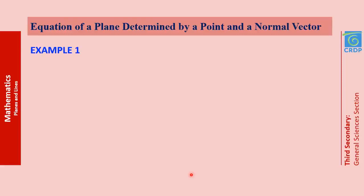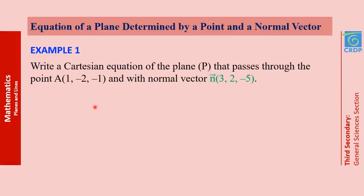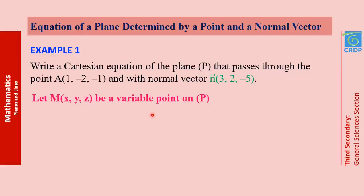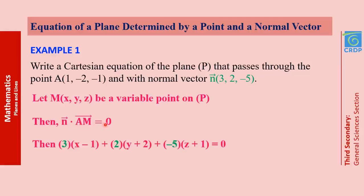Let's take some examples. We need to write a Cartesian equation of the plane P that passes through point A and has N as a normal vector. We choose a variable point M on P and write the vector equation N dot AM = 0. We do some calculations using scalar product and get the equation of the plane: 3x + 2y − 5z − 4 = 0. Remember that 3, 2, and −5 are the components of the normal vector.